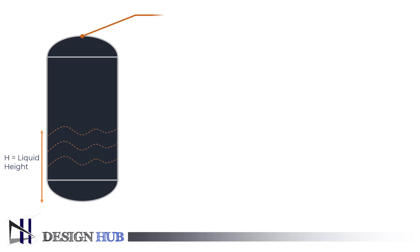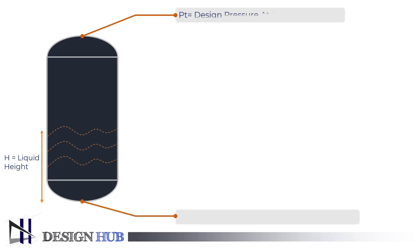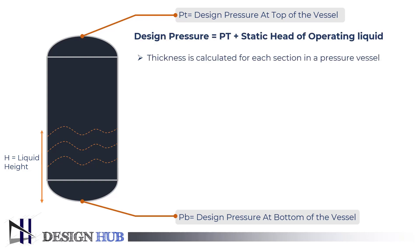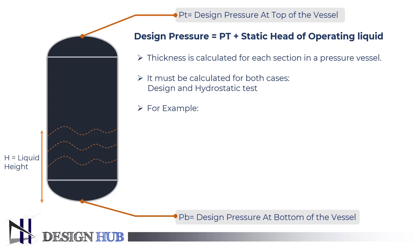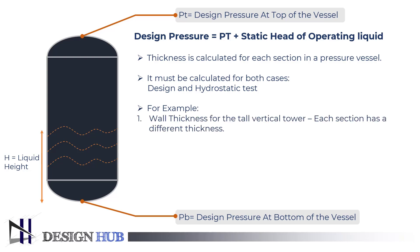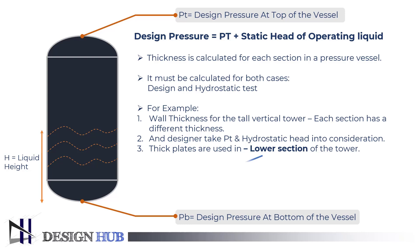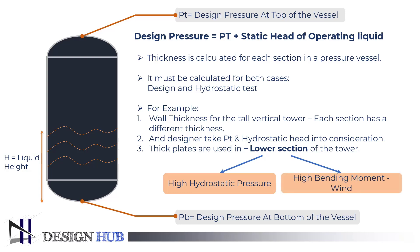Now we will see how the design pressure is determined. The pressure vessel designer must determine the minimum thickness required for each vessel section. The thickness calculation must be made for both the design and hydrostatic test cases, and the minimum specified wall thickness is selected based on the more severe condition. For example, the determination of minimum specified wall thickness of each section of a tall vertical tower must include consideration of the design pressure at the top of the vessel, plus the hydrostatic head applicable at the level being designed. Several wall thickness plates are commonly used in a tall liquid-filled tower — thicker plates are used in the lower sections because of higher hydrostatic pressure and higher bending moments caused by wind.